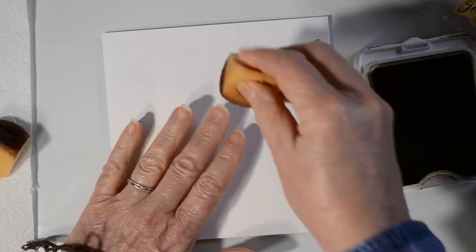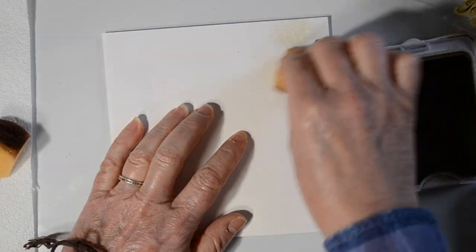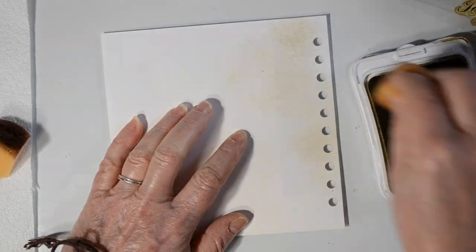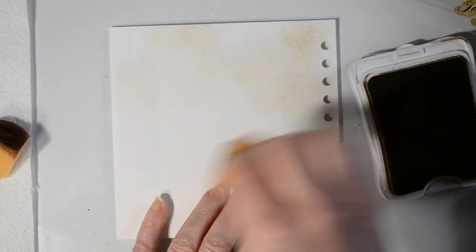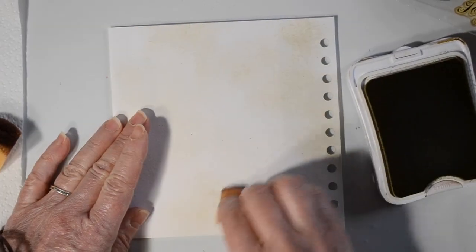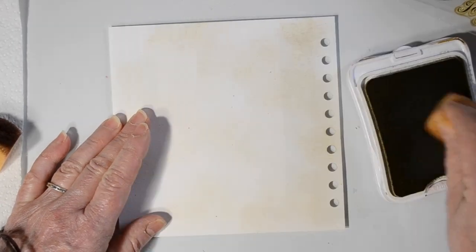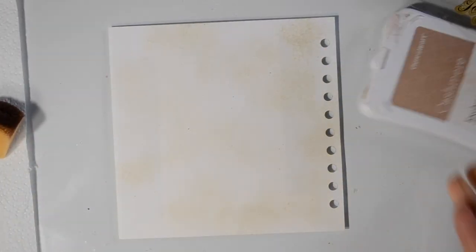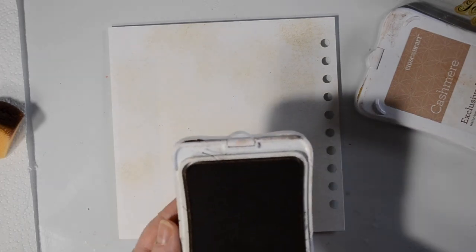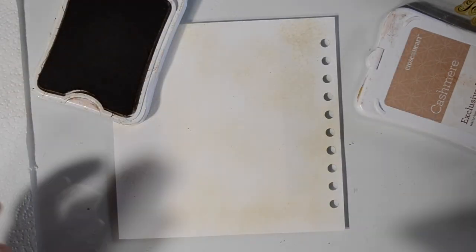I'm going to start by inking up this page. So I'm just taking a sponge with some brown and I believe that color was champagne or cashmere, one or the other. And that's a retired color. I believe it's retired from Close to My Heart. I'll put a link to Close to My Heart in here too if you'd like to find their current inks.